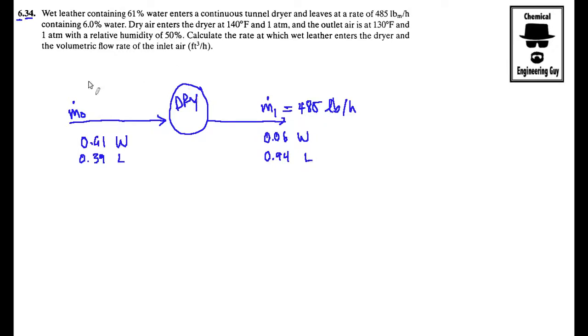Dry air enters the dryer - that makes sense, how can you dry it if you need air. The dry air, let's say it's at 140 Fahrenheit and one atmosphere (this is n0 in moles), and the outlet is at a little bit lower, 10 degrees lower, and one atmosphere. So let's say this is n1.